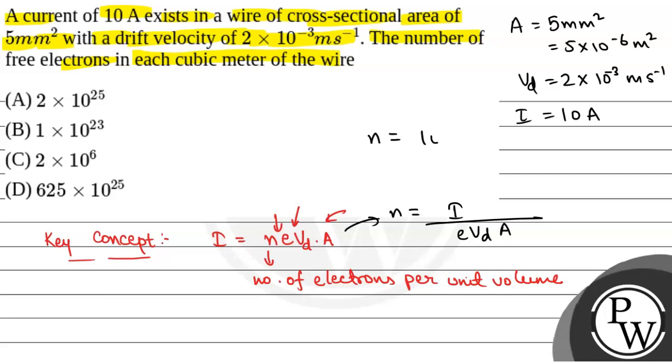N will be equal to 10 Ampere, which is 1.6 into 10 to the power minus 19 Coulomb into VD that is 2 into 10 to the power minus 3 into A that is 5 into 10 to the power minus 6. On solving this, we will get the value of number of free electrons in each cubic meter of wire. That is, N is equal to 6.25 into 10 to the power 27, which is equal to 625 into 10 to the power 25. So, the correct option will be option D.